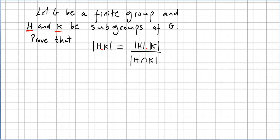This video is an answer to a question I got a couple of times — a good time as ever to answer this. Let G be a finite group and H and K be subgroups of G. Prove that the order of HK equals the order of H times the order of K, divided by the order of the intersection of H and K.